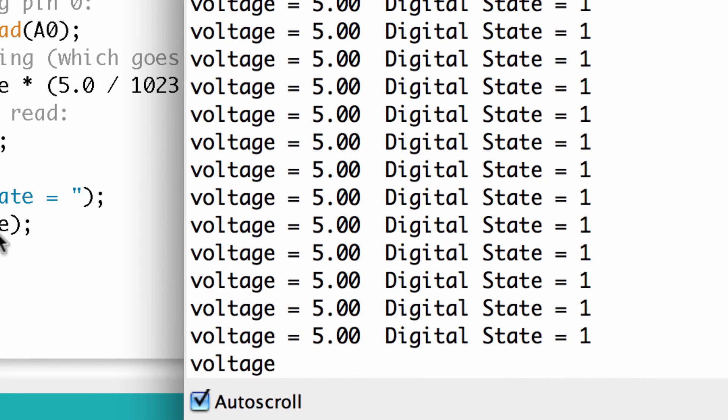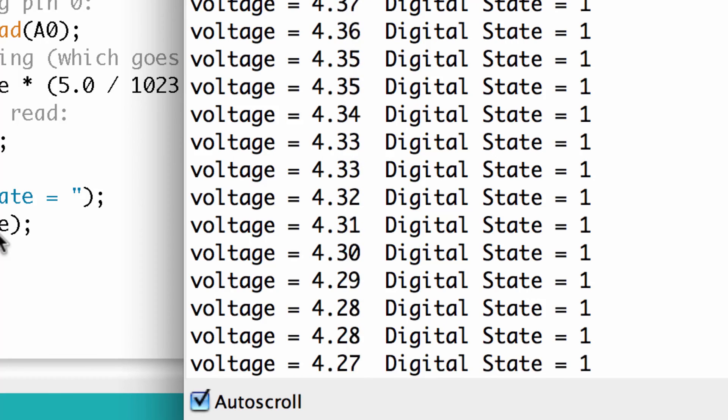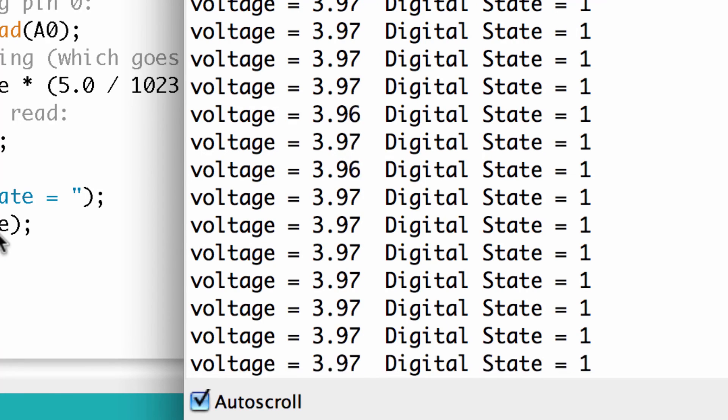Now I'm going to start coming left. As I come left we can see that the voltage is getting lower. Now it's around four, it's still one. Now I'm getting down to 3.5, it's still one. And now I'm down past three. Look, I'm at 2.9 and it's still one.